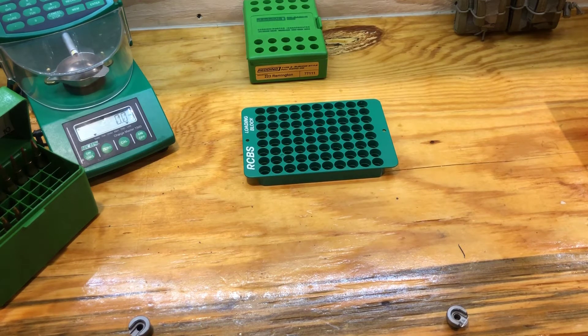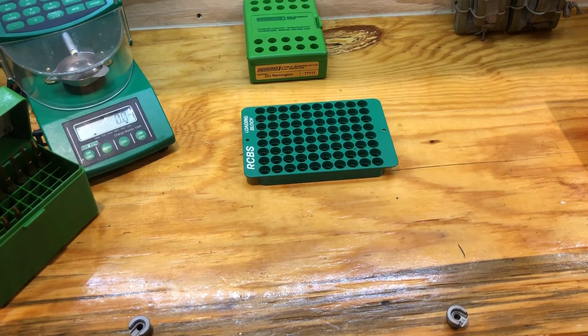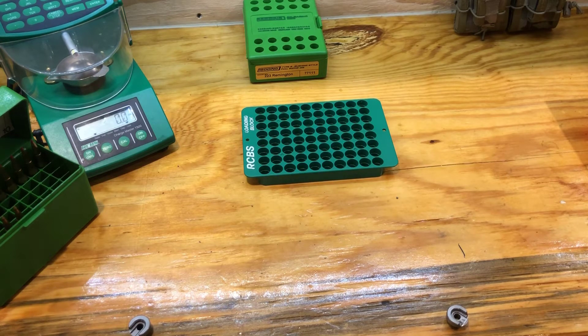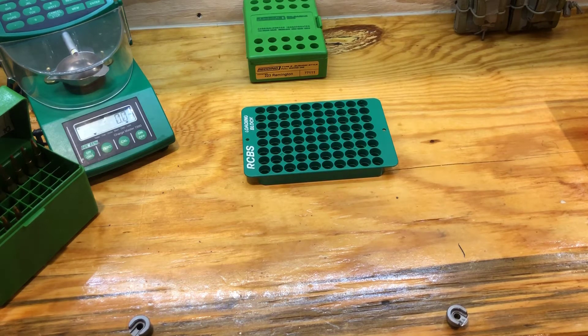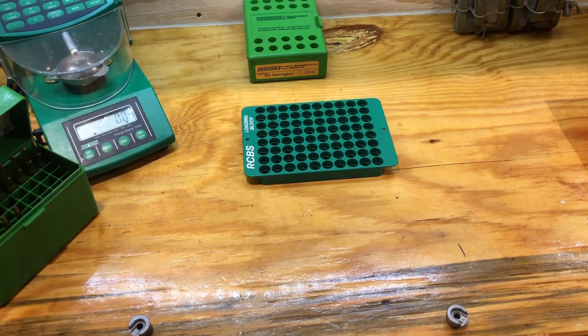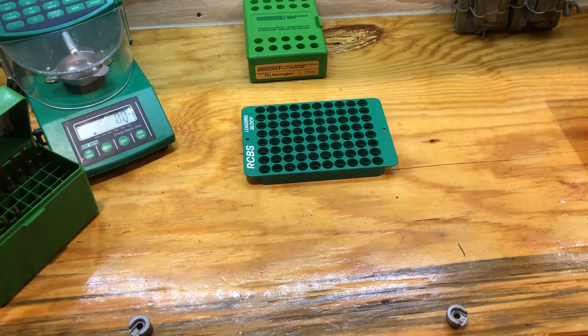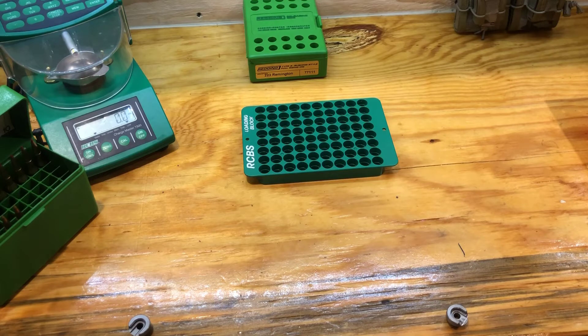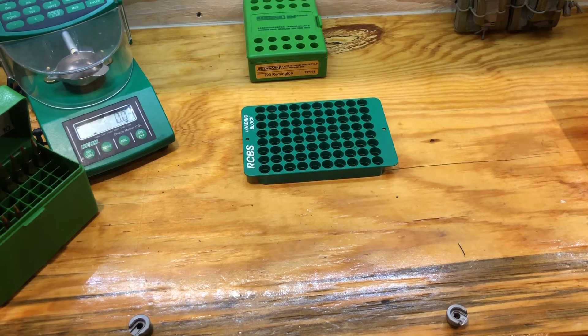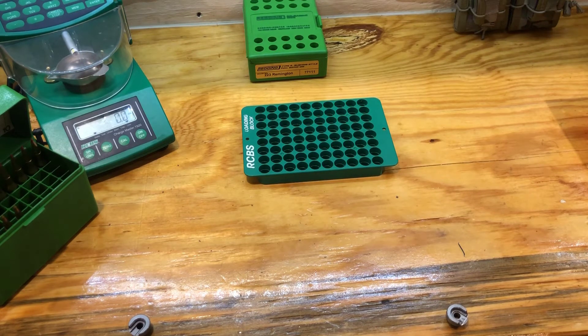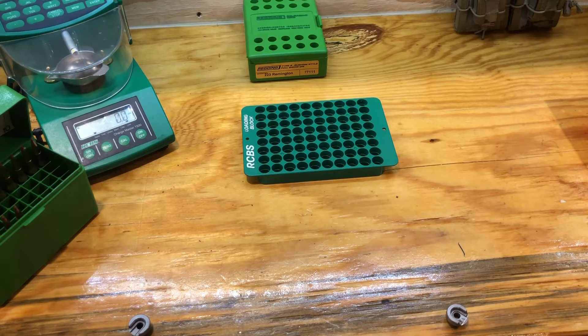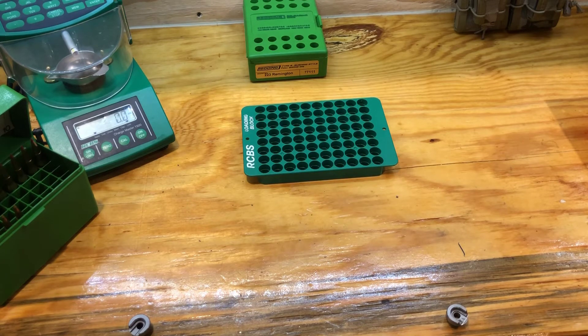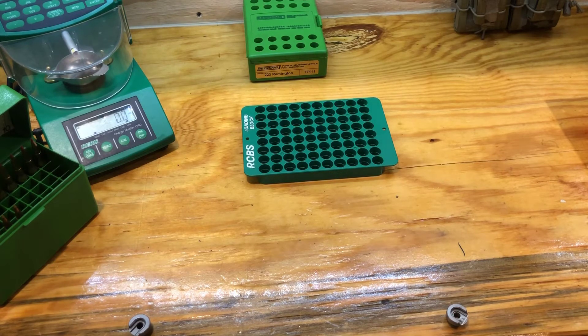So what happens is, whenever you full length resize, initially, before you're actually touching the shoulders, the cartridge will actually stretch out and grow longer up until the point when you actually make contact with the shoulders. Because as that brass is squeezed down, it has to have somewhere to go. It can't go down toward the cartridge head, it has to go out toward the mouth of the brass.